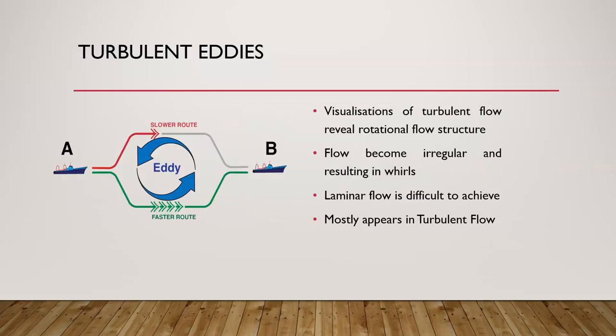The second important term is turbulent eddies. Turbulent eddies occur when particles of fluid are separated by a long distance — eddy motions bring particles back together after separation. We can call turbulent eddies the visualization of turbulent flows, representing rotational flow structures. They are difficult to achieve in laminar flow but easily noticed in turbulent flows due to random and chaotic motion.